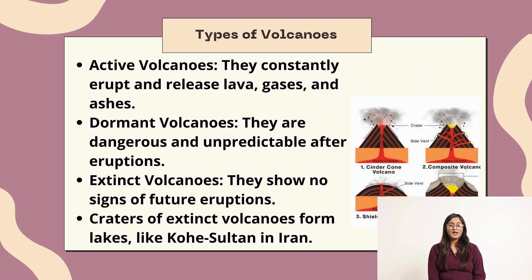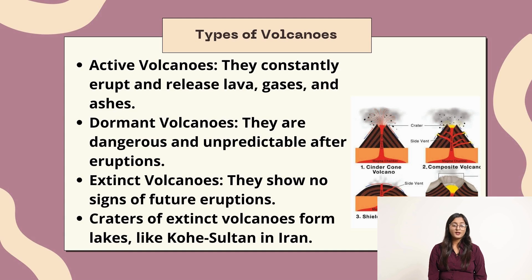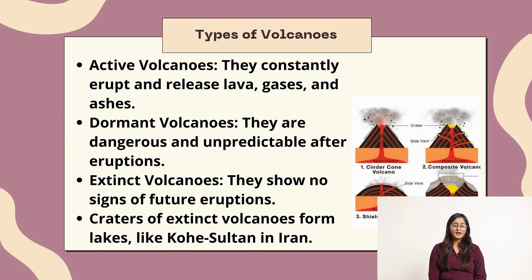Types of volcanoes. Active volcanoes constantly erupt and release lava, gases, and ashes. Dormant volcanoes are dangerous and unpredictable after eruptions. Extinct volcanoes show no signs of future eruptions. Craters of extinct volcanoes form lakes, like Kauhe Sultan in Iran.